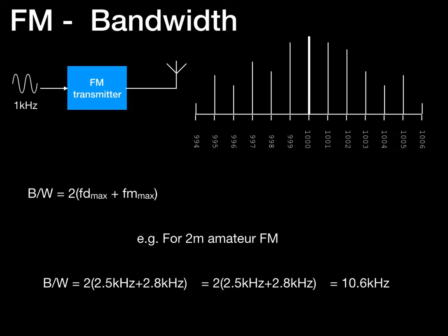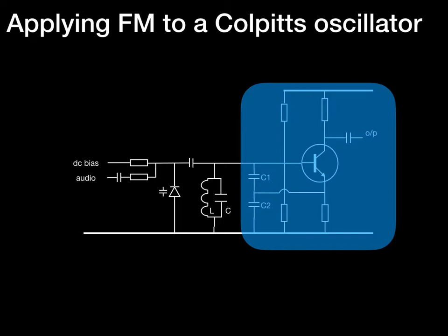Now let's look at applying FM to a practical example. Here we have a Colpitts oscillator — recognisable by C1 and C2 — with an LC circuit on its input. A DC bias comes in, as does audio, and these mix in a varactor (variable capacitance) diode, which provides a variable frequency on the output of the Colpitts oscillator.